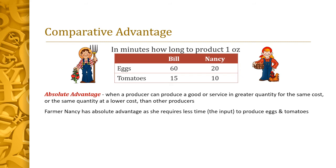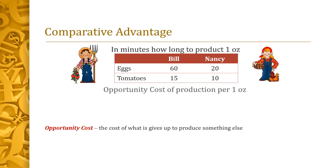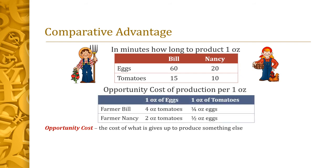But remember, there are two different types of costs. Let's look at opportunity cost — whatever you give up in order to obtain something else. Looking at the opportunity cost chart: for Bill, to produce one ounce of eggs he gives up 4 ounces of tomatoes; for Nancy, it's only 2 ounces of tomatoes per ounce of eggs. Conversely, for more tomatoes, Bill gives up one-quarter ounce of eggs and Nancy gives up one-half ounce of eggs. Their opportunity costs look very different from their absolute value costs.